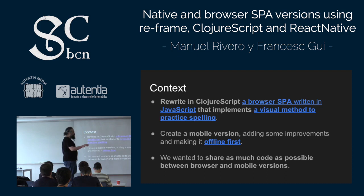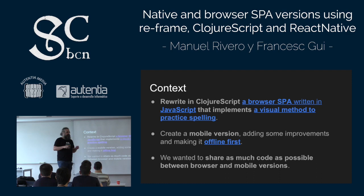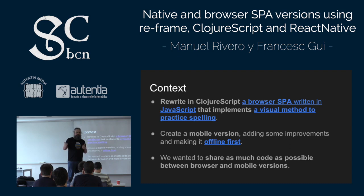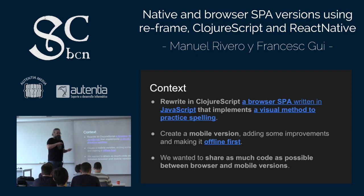To put you in context: we were rewriting an application, an SPA that was already written in JavaScript, for practicing spelling — it implements a visual spelling method. We wanted to rewrite it in ClojureScript, make it work offline, and also have a native version, sharing as much code as possible between the browser and the native version.